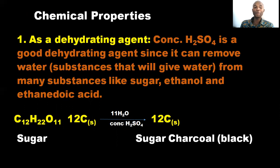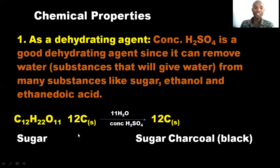The chemical properties: H₂SO₄ behaves in several ways. First, as a dehydrating agent — dehydrating means removal of water. Concentrated H₂SO₄ is a good dehydrating agent since it can remove water from many substances like sugar, ethanol, and ethene. When H₂SO₄ is added to sucrose, which is a sugar, it will dehydrate it and it will turn black. That black substance is carbon, which is sugar charcoal. This demonstrates the dehydrating ability of tetraoxosulphate-VI acid.